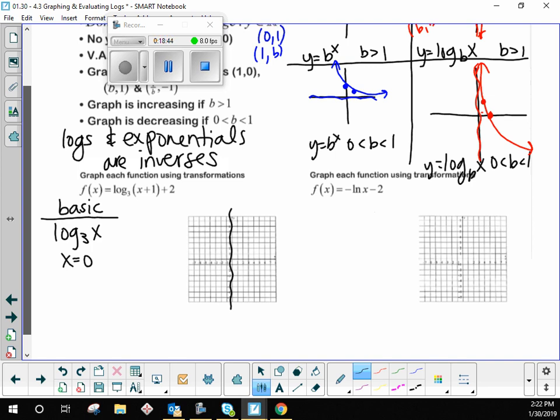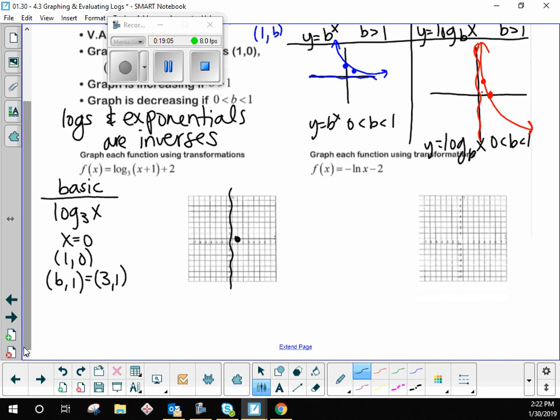We're going to graph that first and then we'll do the transformation. So, log base 3 of x has a vertical asymptote at x equals 0. Give me, what else does it have? 0, 1? 1, 0. It's got a point at 1, 0. And it's got a point at 1, I'm sorry, b1. But what is b here? 3. So, it's really got a point at 3, 1. The graph looks, this is the basic shape of the graph.